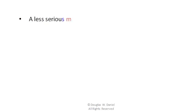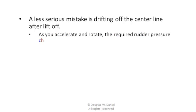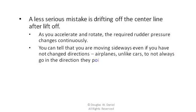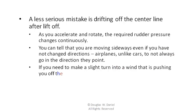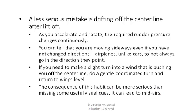A less serious mistake is drifting off the center line after you have lifted off. As you accelerate and rotate, the required rudder pressure changes continuously. You can tell that you are moving sideways even if you have not changed directions. Airplanes, unlike cars, do not always go in the direction they point. So if you need to make a slight turn into the wind to compensate for it pushing you off the center line, do a gentle coordinated turn and return to wings level. The consequence of allowing yourself to drift off the center line can be more serious than missing some useful visual cues — it can lead to mid-air collisions.